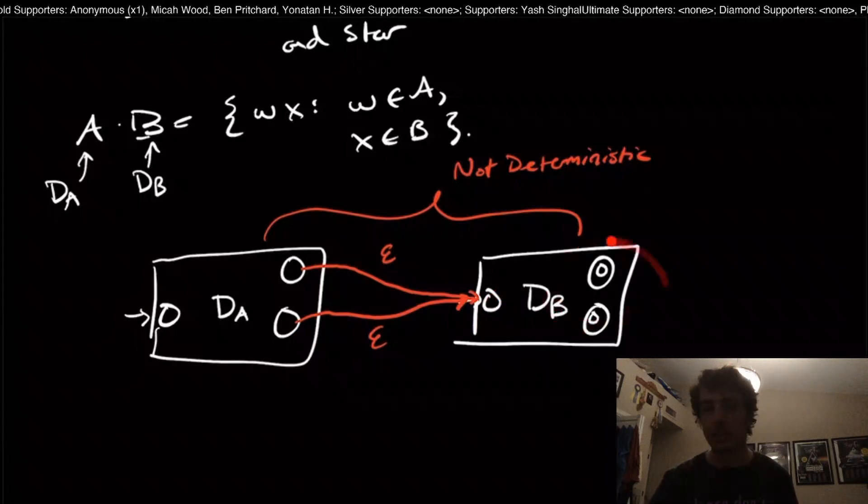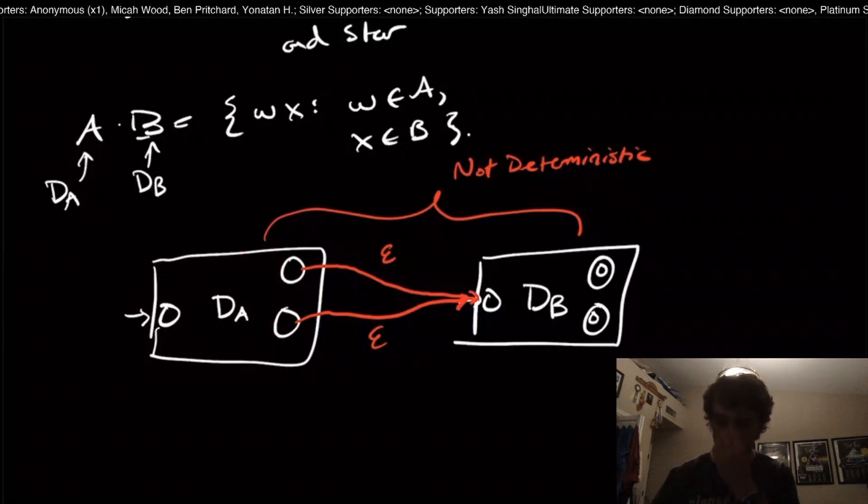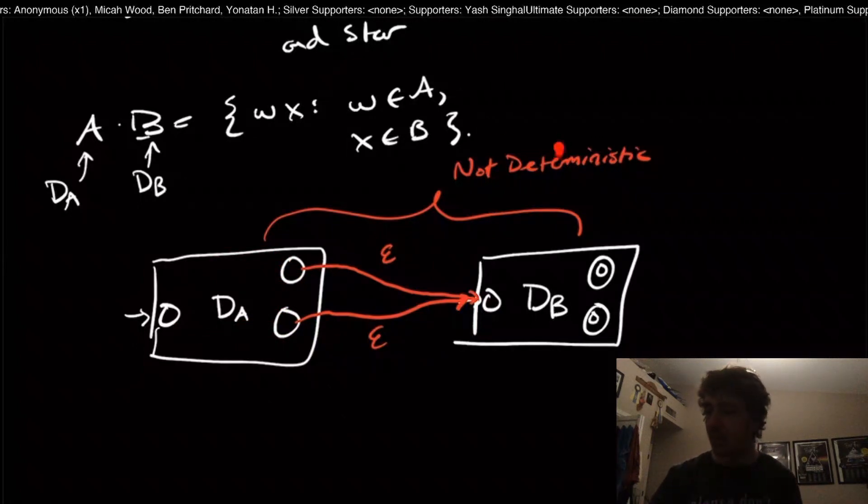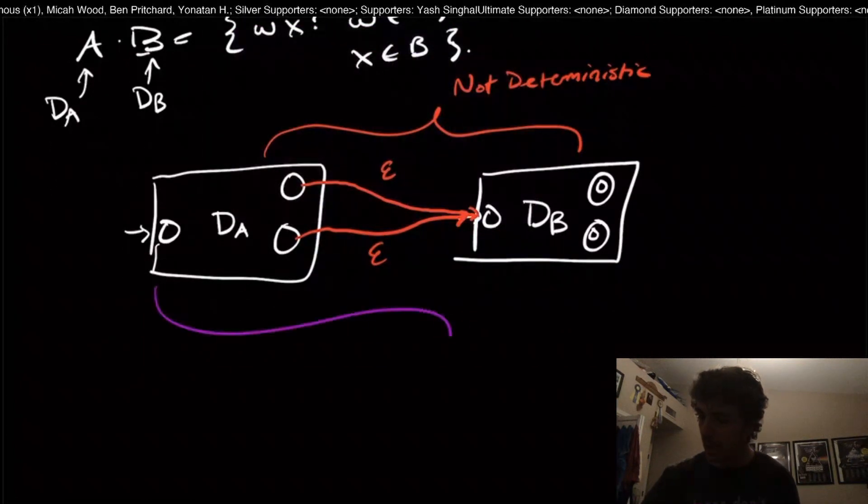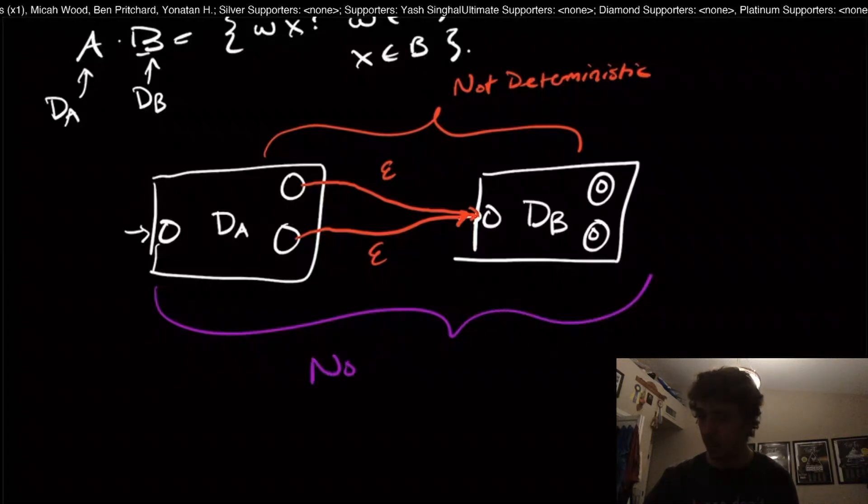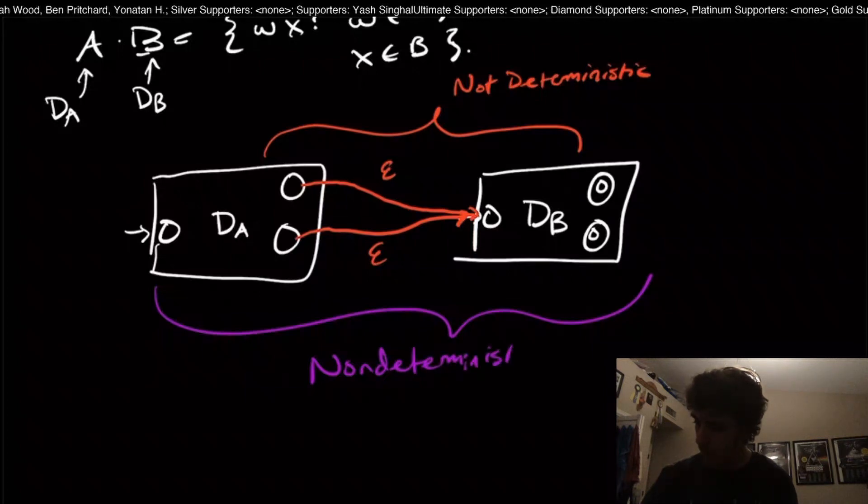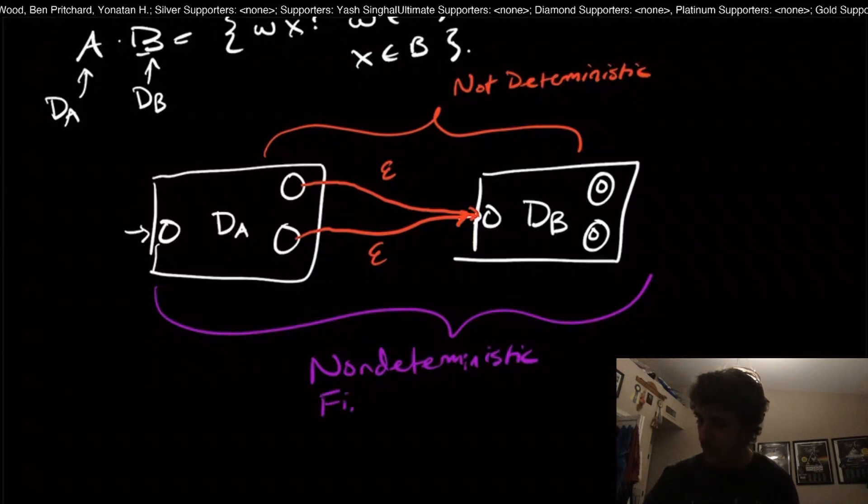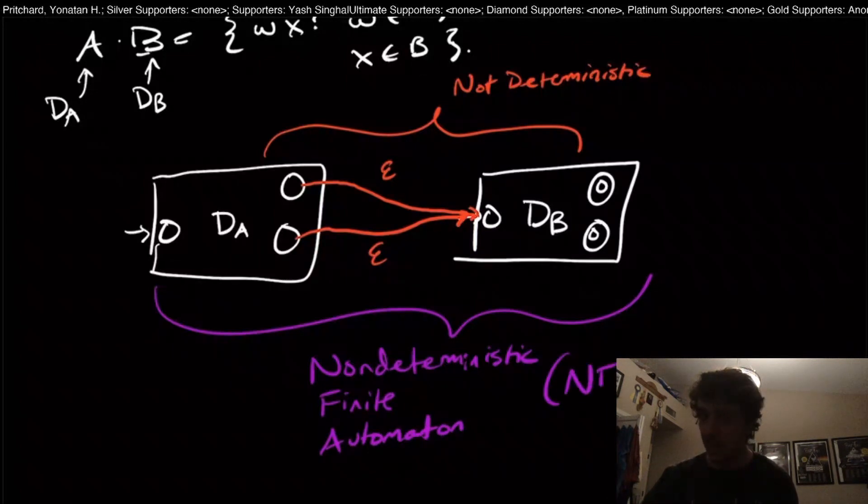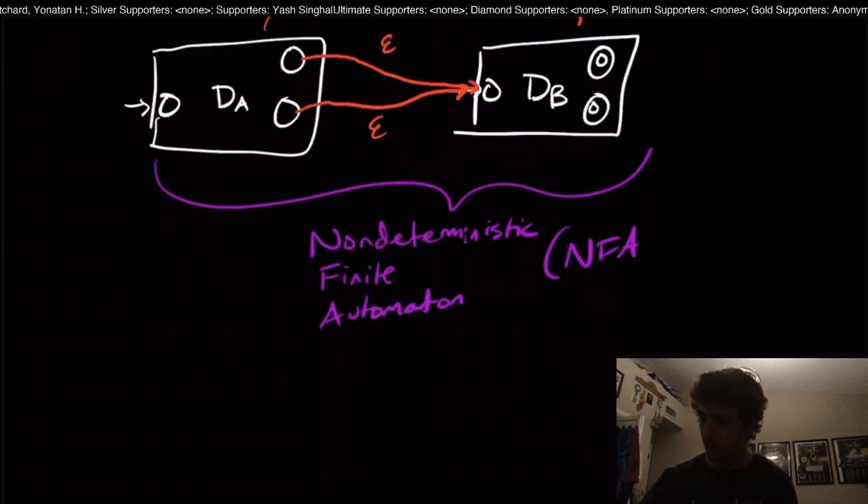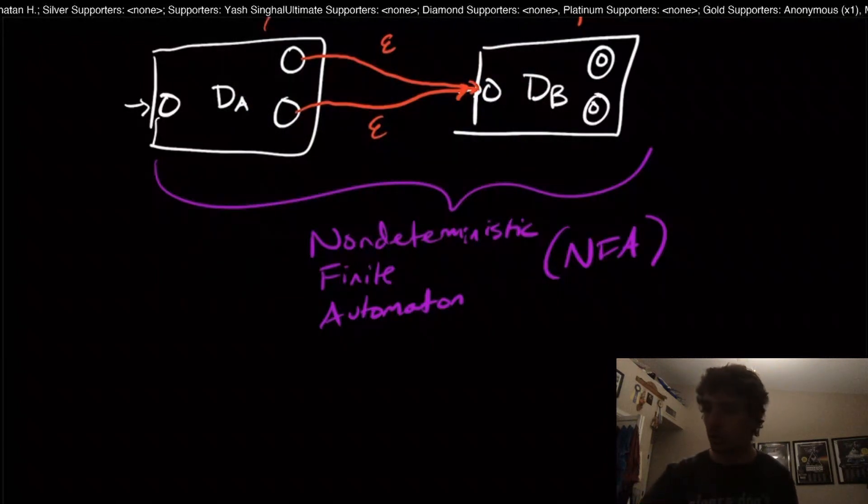But if we want to accept the string at some point, we must take it because the only final states are over here. There's no final states over here. For that reason, we have some kind of non-deterministic behavior, and that's what we're going to call a non-deterministic finite automaton. The shorthand for this is NFA.